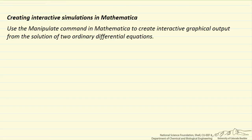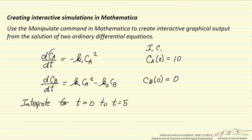The differential equations we're going to use in this example are as follows. The dependent variables are CA and CB, and the independent variable is time, represented as t. It's an initial value problem, so we have initial conditions at time equals zero — this is the value for CA and this is the value for CB. We also have two constants, K1 and K2, whose numerical values we're going to change in the interactive program to observe how CA and CB change as a function of time.